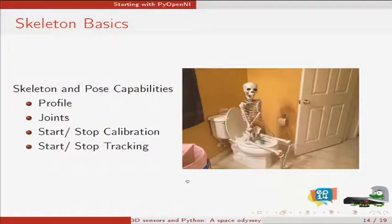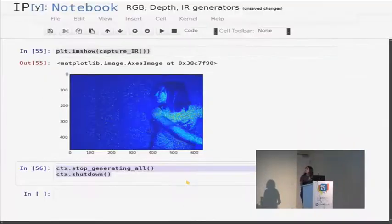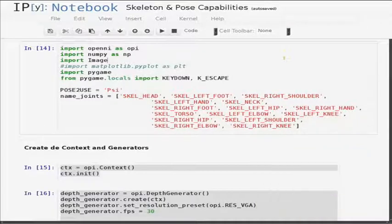So let's go to skeleton basics. Inside of the player generator you have the capabilities of tracking skeleton and analyze pose. For that you can choose a profile. Maybe you don't want to track all the skeleton. Maybe the half and which half you want to track. OpenNI gives you a set of joints. You can use all of them or make a subset. And you have functions to start and stop the calibration and tracking. We are importing the same libraries. We are defining the pose we are going to use for calibration. And then I make a list of the joints I want to track. Maybe you want to do something special with some joints. You can use a dictionary to get the values back.